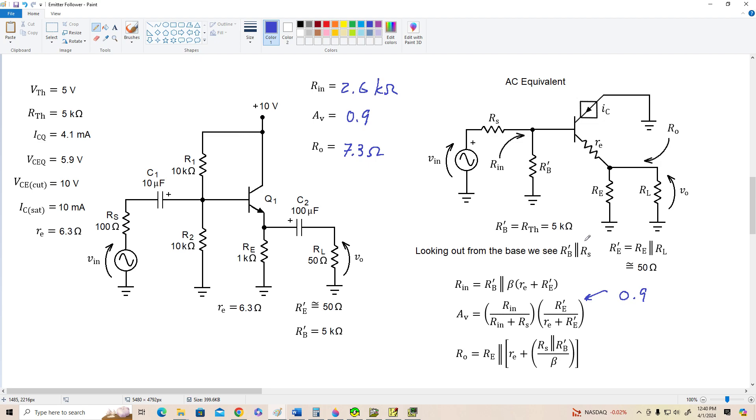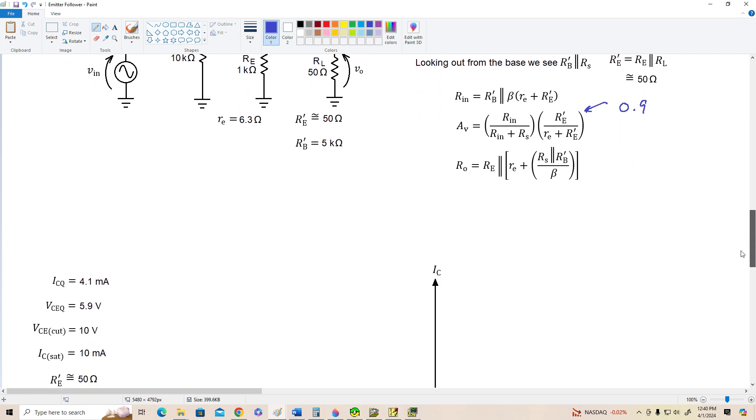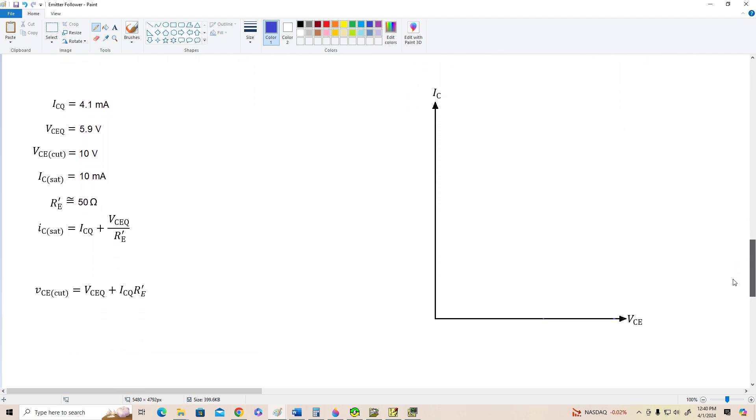Alright, so let's go on and see why this amplifier is actually not very good. So to do that, we're going to do the DC and AC load lines. Here are my equations for ICSAT and VCE cutoff for the AC load line. They're the same ones we used before, except now we don't have an R prime C term. So we just simplified them a bit. ICSAT is equal to ICQ 4.1 milliamps plus VCEQ 5.9 volts divided by R prime E, which is 50 ohms.